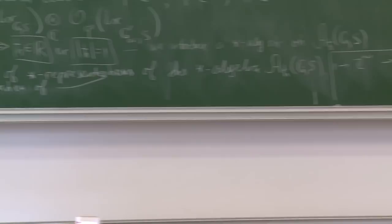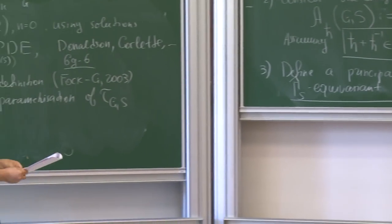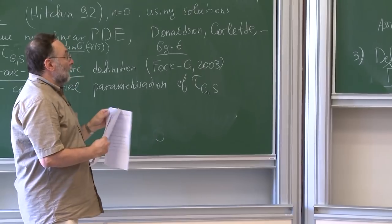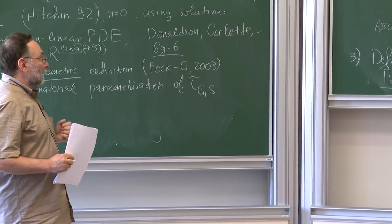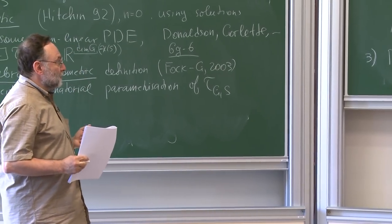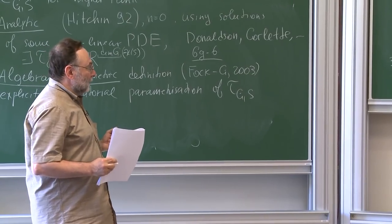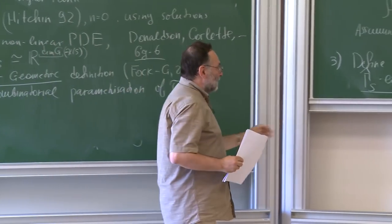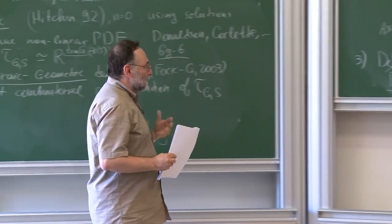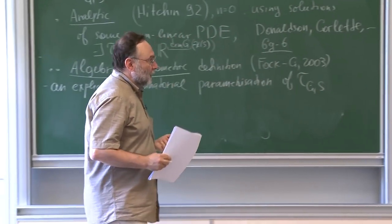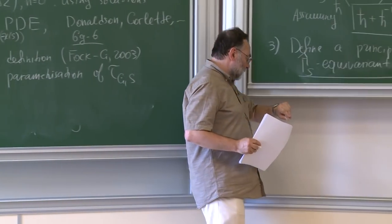This blackboard is a kind of road plan for what we're going to do — we're going to construct this data. There are some compatibilities, and the word 'construct a representation of a star algebra which is gamma-equivariant' needs to be explained. Let me do that first, and then I'll proceed.